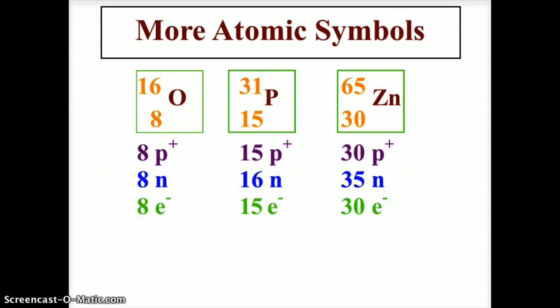For zinc, the atomic mass unit is 65, and the atomic number is 30. 65 minus 30 tells us the neutron value is 35. The proton number is the same as the atomic number, 30 protons. And because this is a neutral atom, we have 30 electrons.